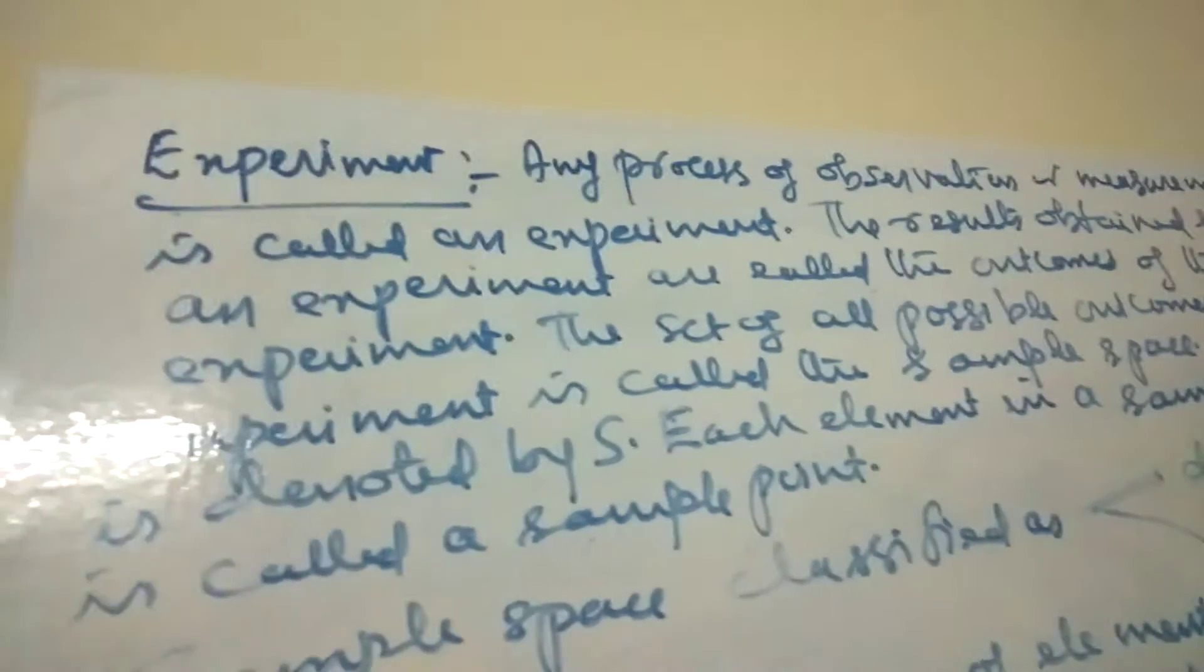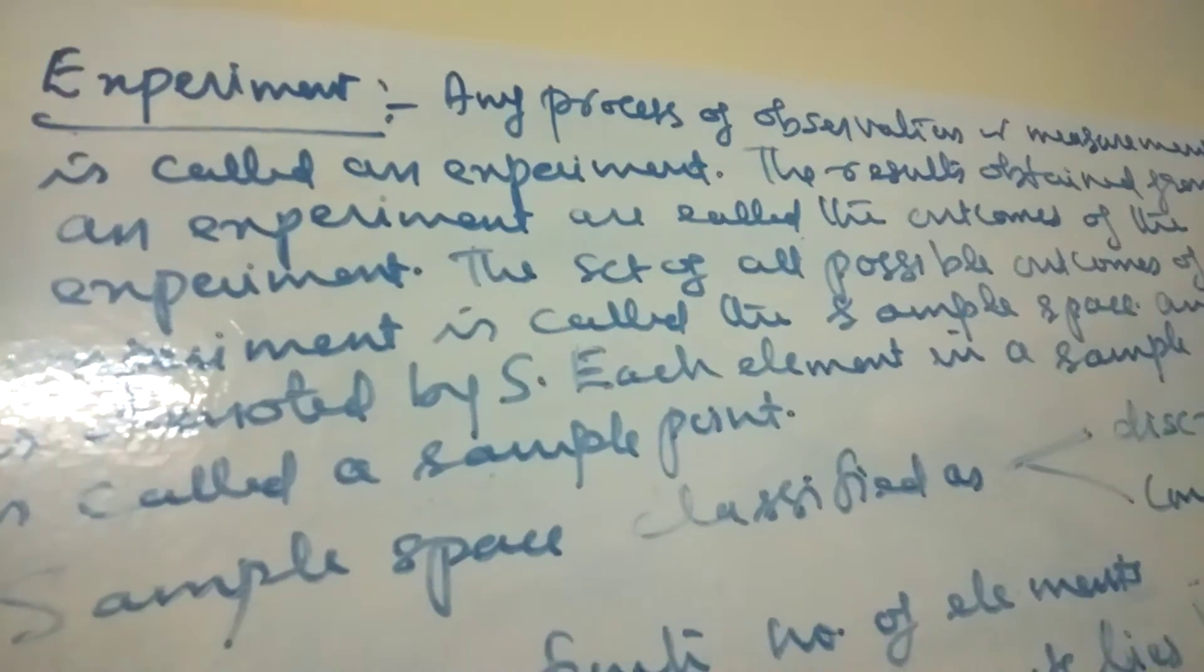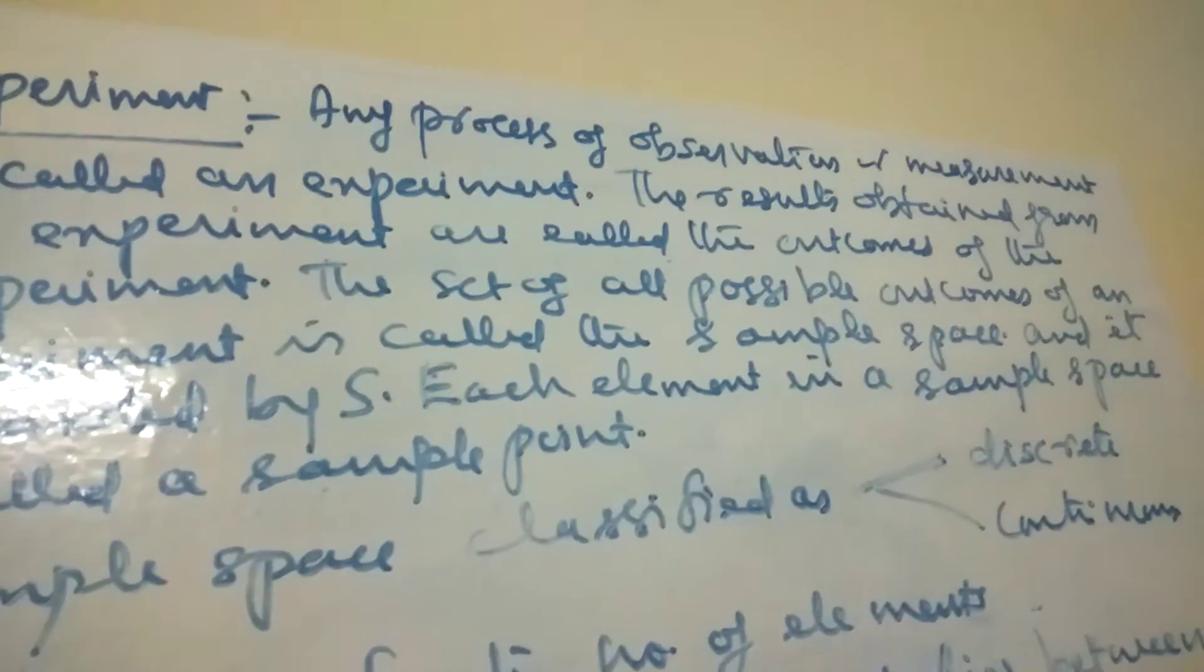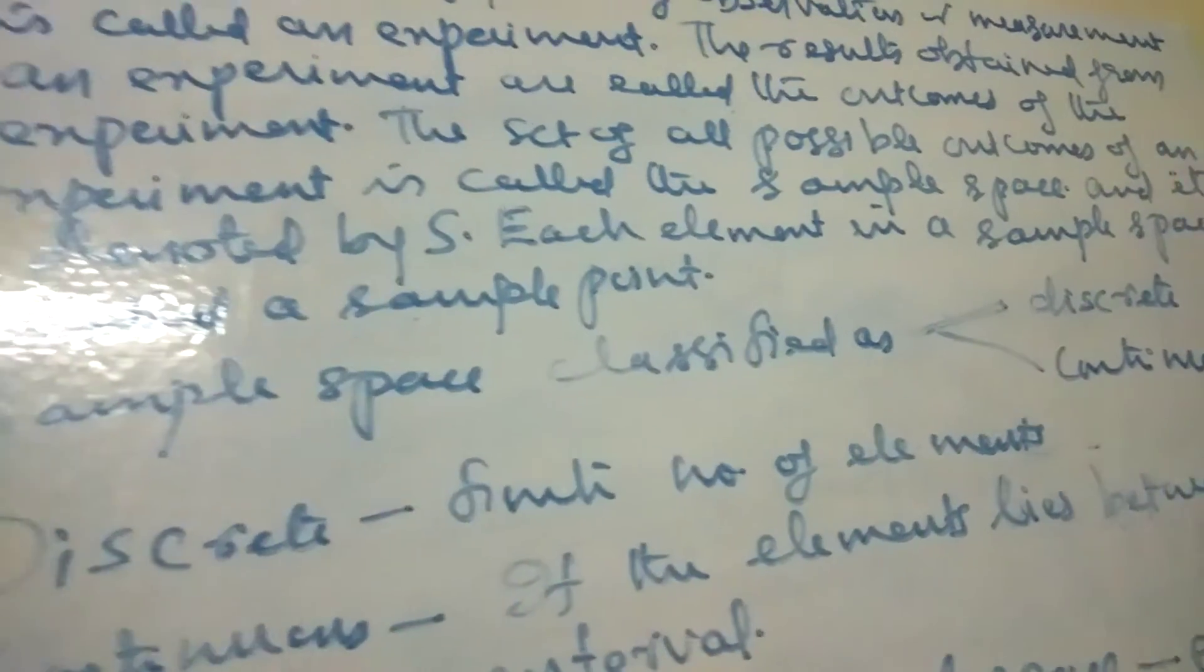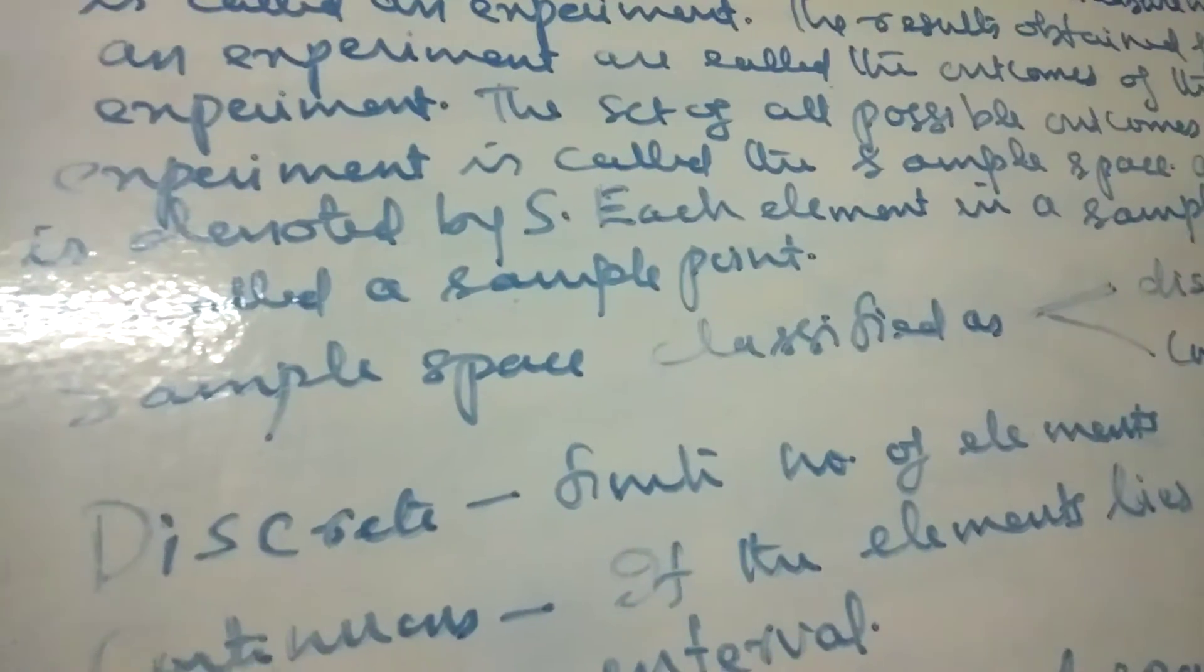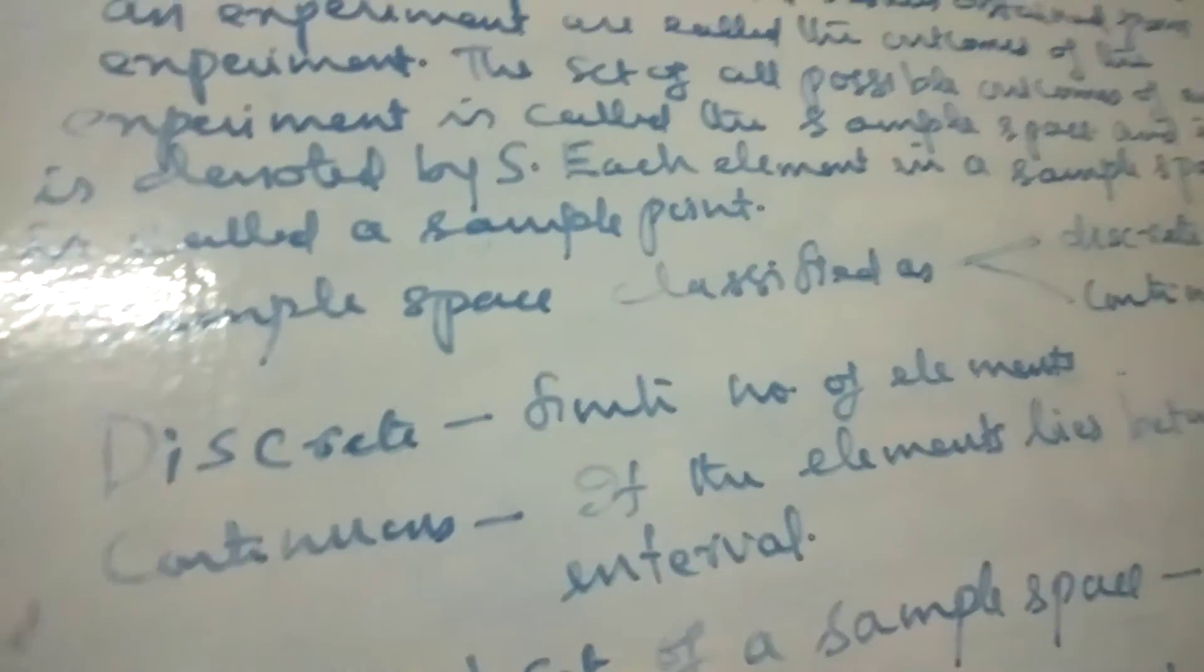The results obtained from an experiment are called the outcomes of the experiment. The set of all possible outcomes of an experiment is called the sample space and it is denoted by S. Each element in a sample space is called a sample point.